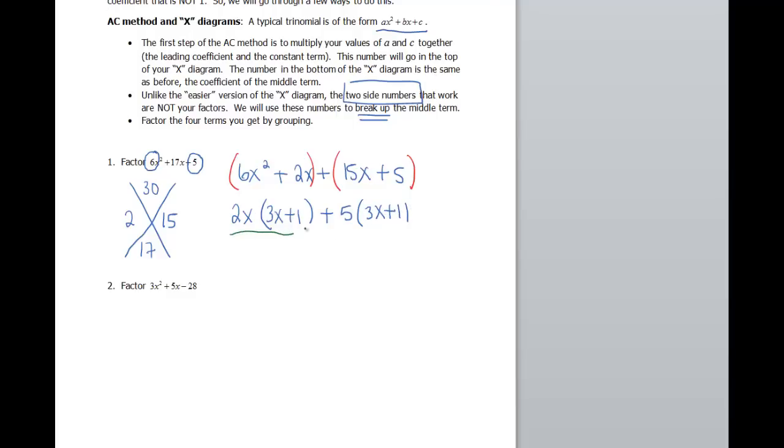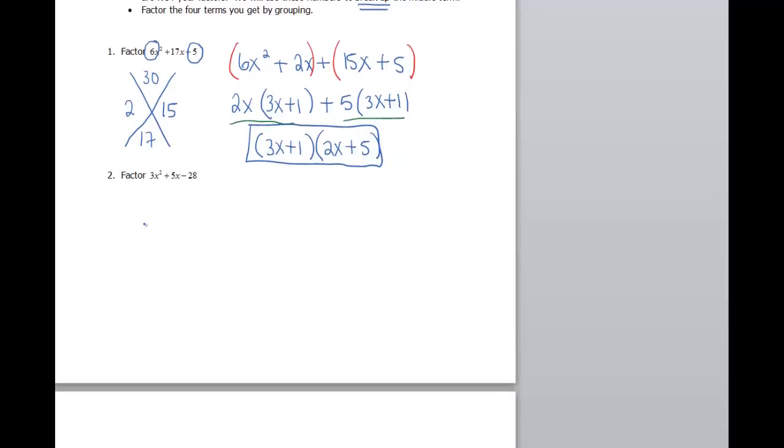Looking at this set as one term, this set as another term, these two have a 3x plus 1 in common, so I can factor that out. When I factor that out, that leaves me with a 2x plus 5. And that is my trinomial factored. These can be some of the most frustrating polynomials to try to factor.